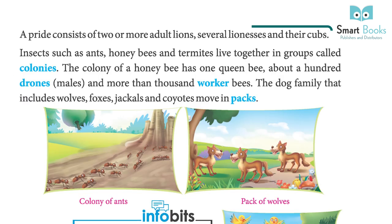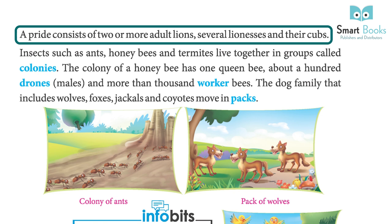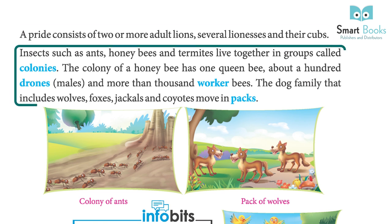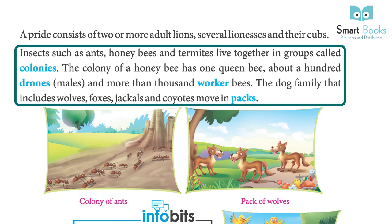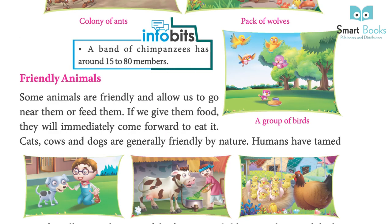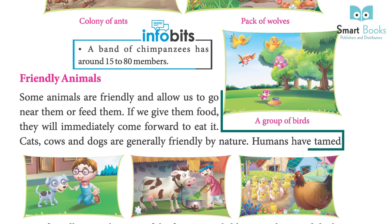A pride consists of two or more adult lions, several lionesses, and their cubs. Insects such as ants, honeybees, and termites live together in groups called colonies. The colony of a honeybee has one queen bee, about a hundred drones (males), and more than a thousand worker bees. The dog family, which includes wolves, foxes, jackals, and coyotes, moves in packs. A band of chimpanzees has around fifteen to eighty members.